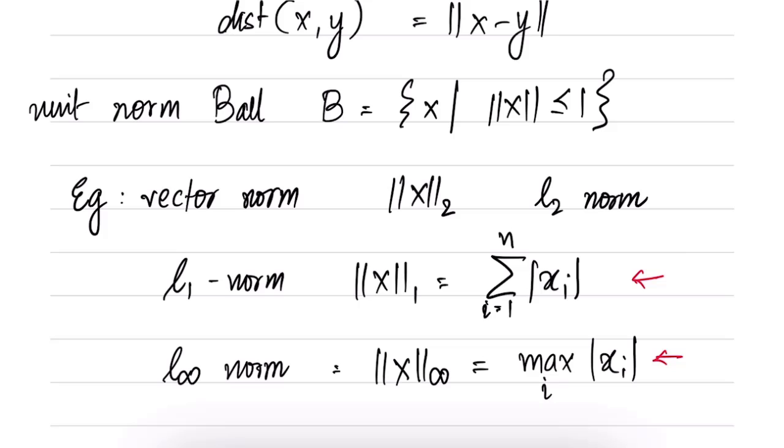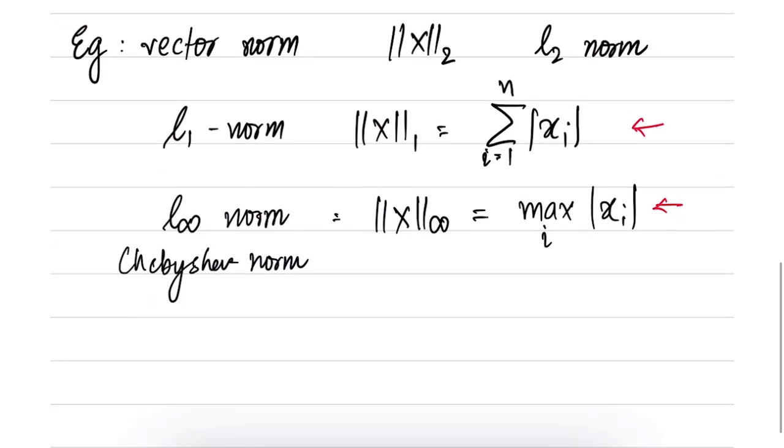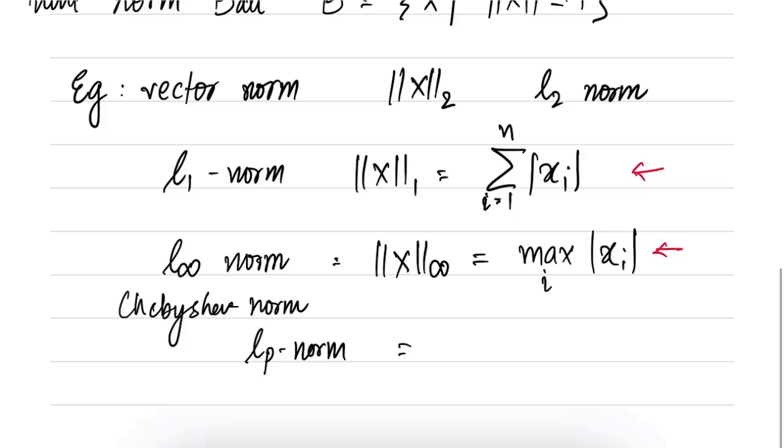By the way this L∞ norm is also called the Chebyshev norm. And intermediate to these there is also the Lp norm which is for general p from 1 to infinity which takes the form summation of |x_i|^p, i = 1 to n, and then pth root. If you take p tending to infinity you will actually get the L∞ norm. And if you take p = 1 you will get the L1 norm.